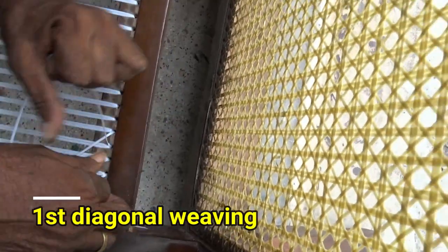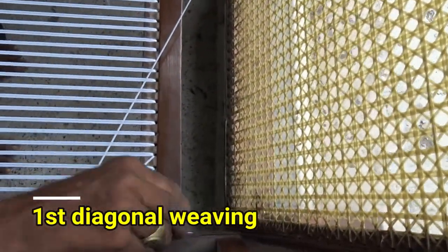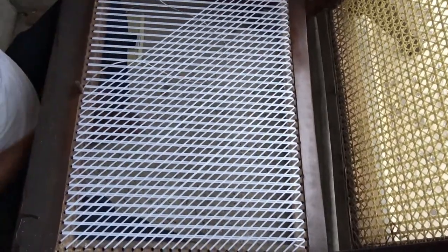Now starts the diagonal weaving. This is the first diagonal weaving for the formation of the square design.